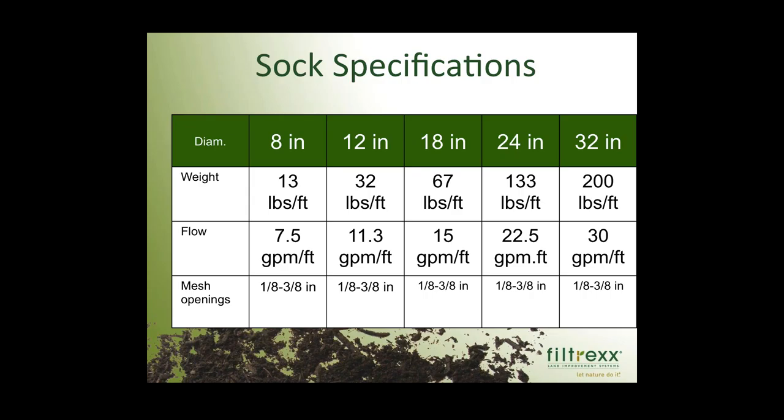The flow-through rate is quite high — in some cases these are considered high-flow sediment control devices. Starting at 7.5 gallons per minute per linear foot for the 8-inch sock, this increases with diameter. Because they are porous and allow high flow-through rates, hydrostatic pressure doesn't build up behind them as it does with devices that restrict flow. This allows them to act as a true filter and makes them less likely to undercut or overtop.